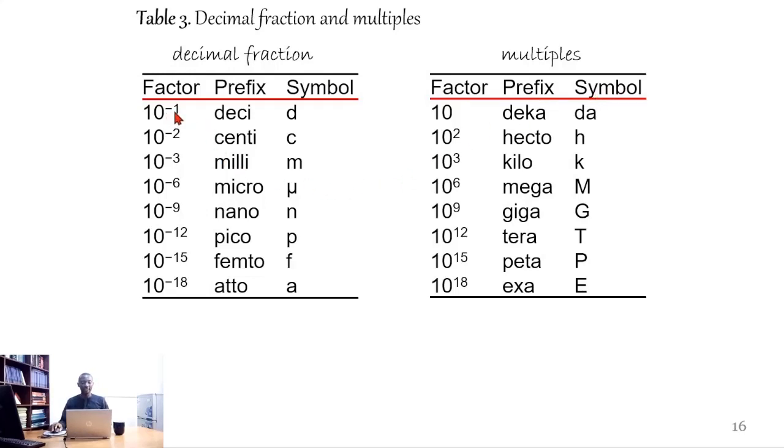10⁻¹ prefix deci, symbol d. 10⁻² centi, symbol c. 10⁻³ milli, symbol m. 10⁻⁶ micro, symbol μ. 10⁻⁹ nano, symbol n. 10⁻¹² pico, symbol p. 10⁻¹⁵ femto, symbol f. And 10⁻¹⁸ atto, symbol a.